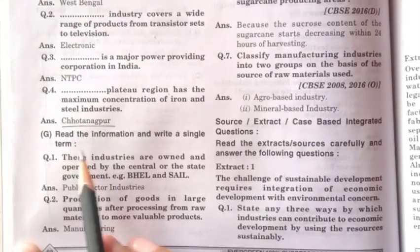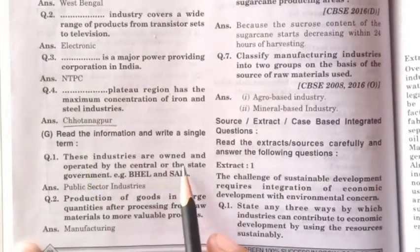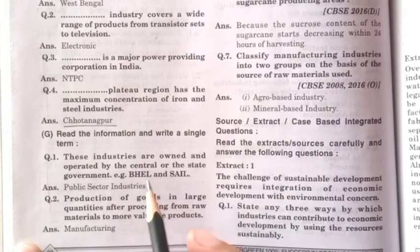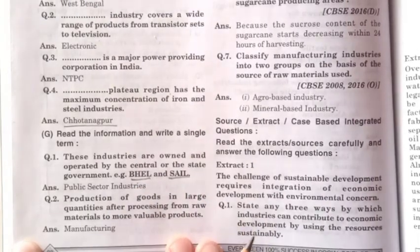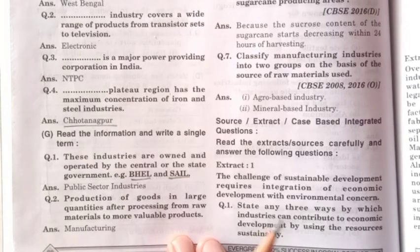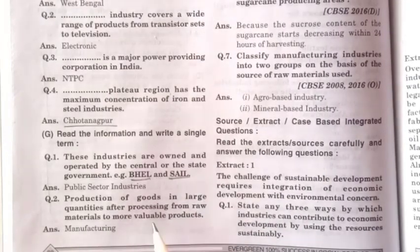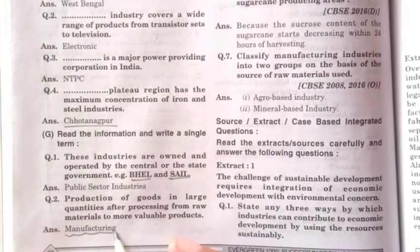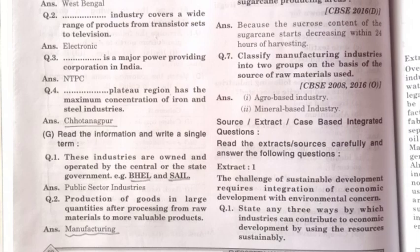Next portion: read the information and write a single term. These industries are owned and operated by the central or the state government — for example, BHEL and SAIL. On the basis of ownership we have four kinds: public sector, private sector, cooperative sector, and joint sector. The answer here is public sector. Second: production of goods in large quantities after processing from raw material to more valuable products — that is known as manufacturing. Manufacturing is the process to convert raw material into a useful finished product in large quantities, and it is the major activity of the secondary sector.